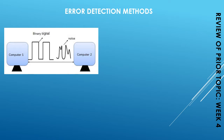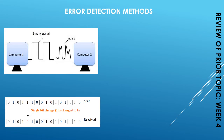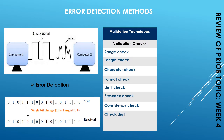In week four, we talked about error detection methods in detail. An error is basically a condition when the output information does not match with the input information during transmission. Digital signals suffer from noise — meaning a zero bit may be replaced with a one, or a one changed to a zero — which can cause errors. Errors can also be due to hardware failure or software crashes.